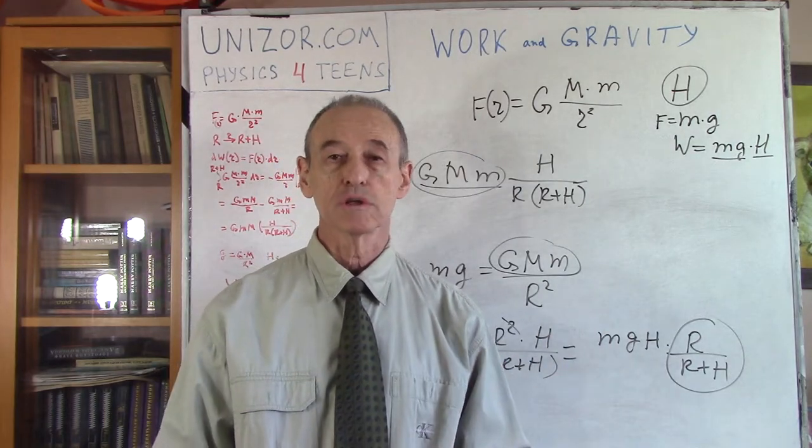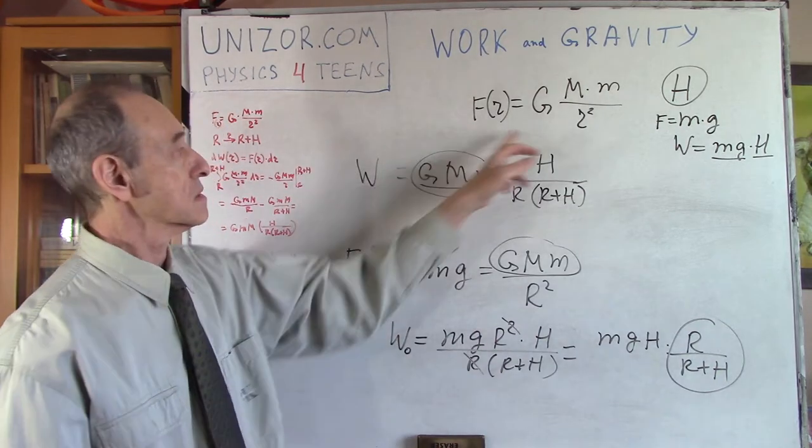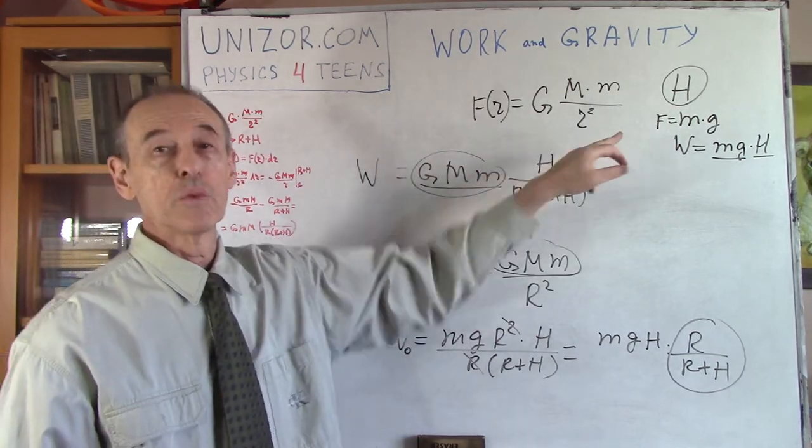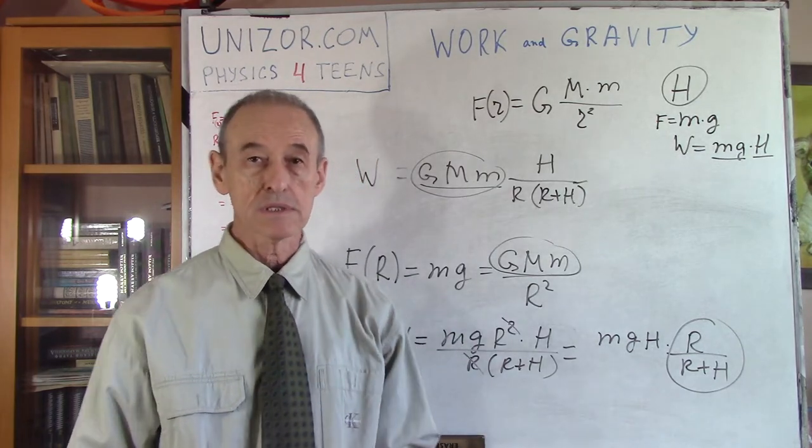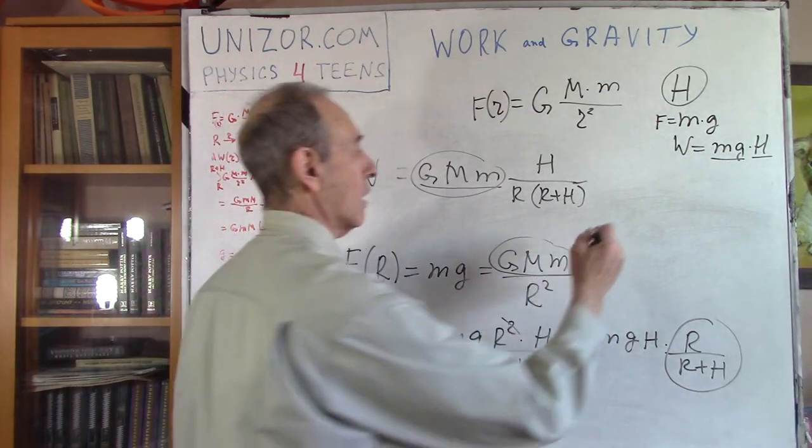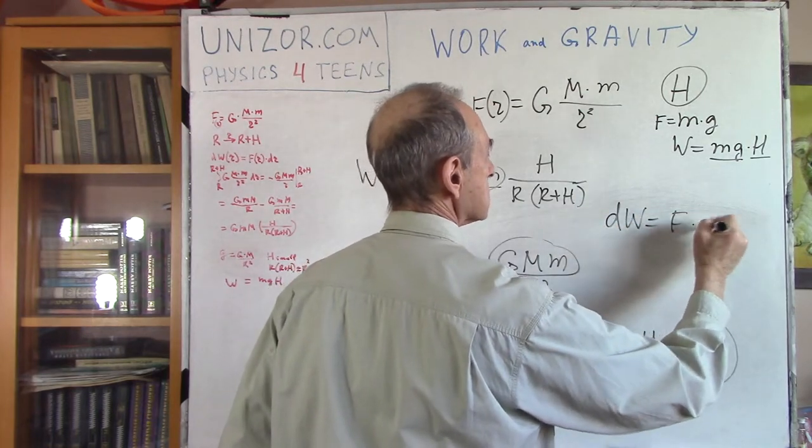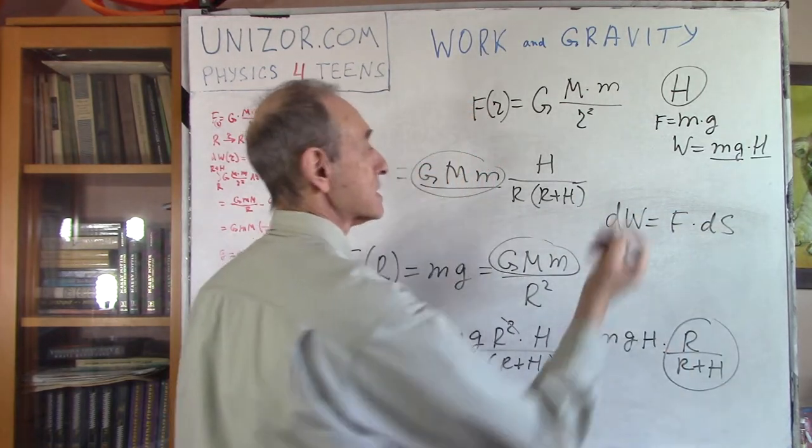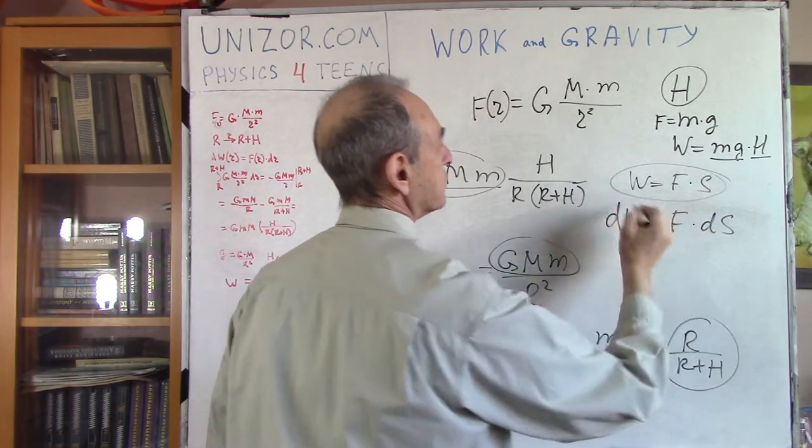I mean, the previous lecture about elasticity and this one about gravity, they're just illustration of how to deal with variable force, when you still have to calculate the work which is performed by this force. It's all based on dW = F ds, instead of W = F times s, when F is constant.